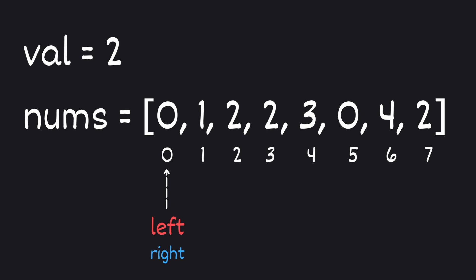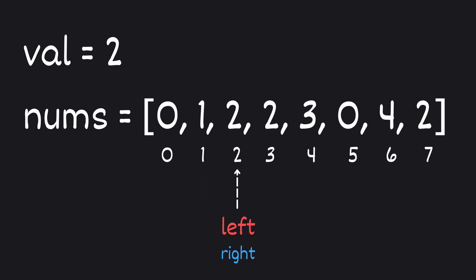We will iterate through the array using the right pointer and keep track of unique elements with the left pointer. On step 1, our first element is 0, which is not our target value, so we move left and right pointers to 1. On step 2, we have 1, which is again not our target value, so we move left and right pointers to index 2. On the next iteration, our item is 2, which is our target value, so we keep our left pointer here and move our right pointer to the next index, which is 3.